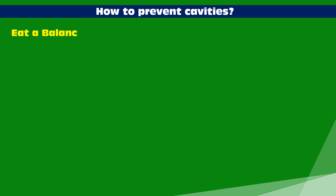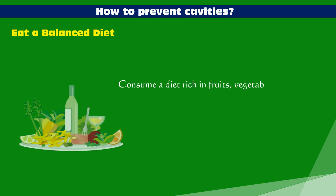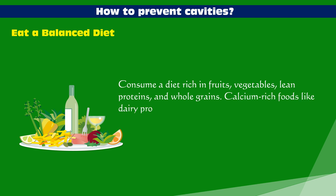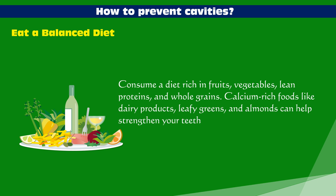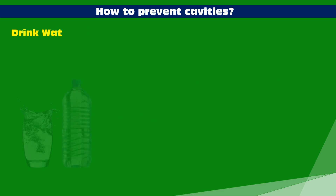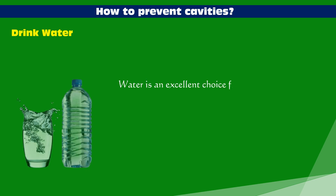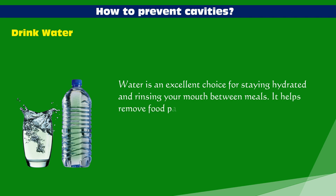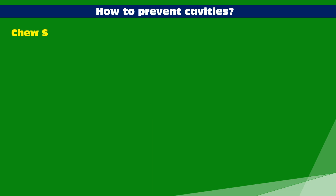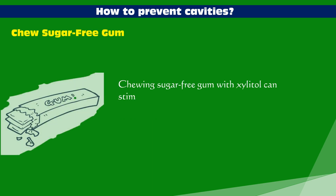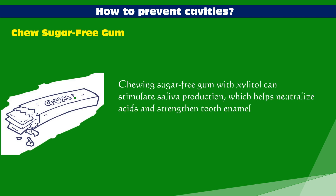Eat a balanced diet rich in fruits, vegetables, lean proteins, and whole grains. Calcium-rich foods like dairy products, leafy greens, and almonds can help strengthen your teeth. Drink water: it is an excellent choice for staying hydrated and rinsing your mouth between meals, helping remove food particles and acids. Chew sugar-free gum with xylitol, which can stimulate saliva production, helping neutralize acids and strengthen tooth enamel.